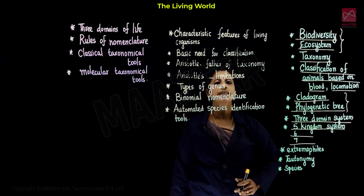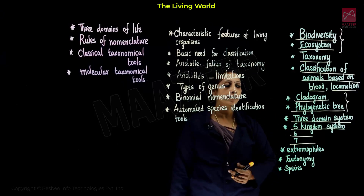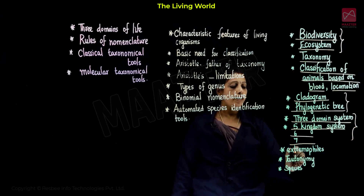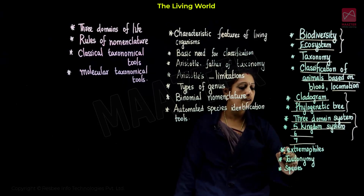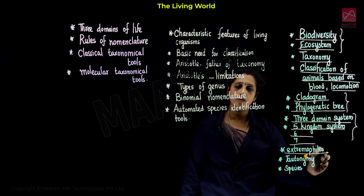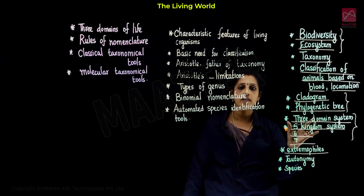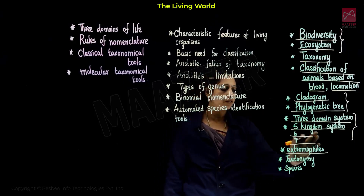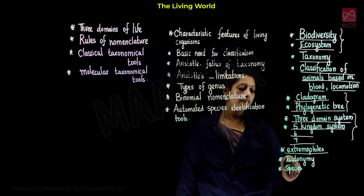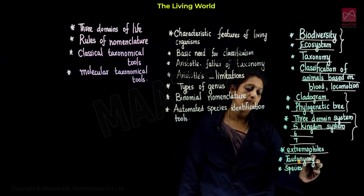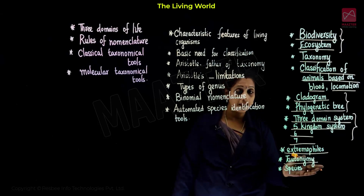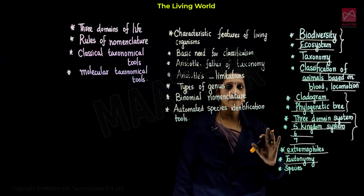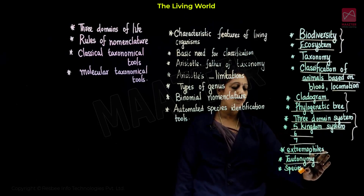This section is very easy to learn. Next — three domain systems: Extremophiles, extreme condition, micro-organism, extremophiles. Then Taxonomy — species name, generic name, two of them. Example: Naja. Then Taxonomy, then species.